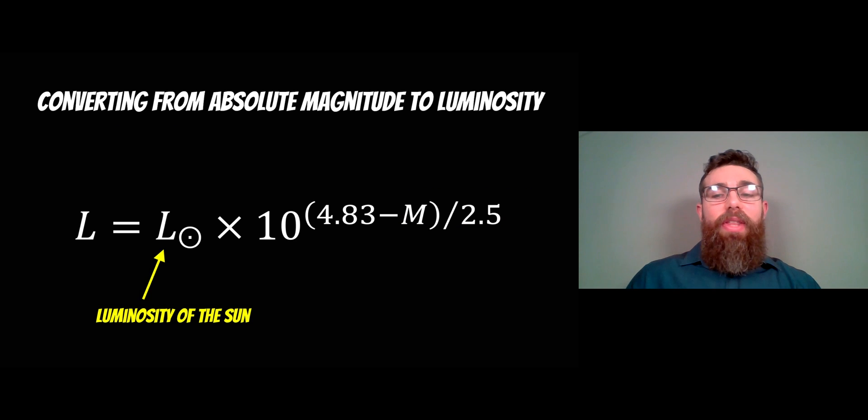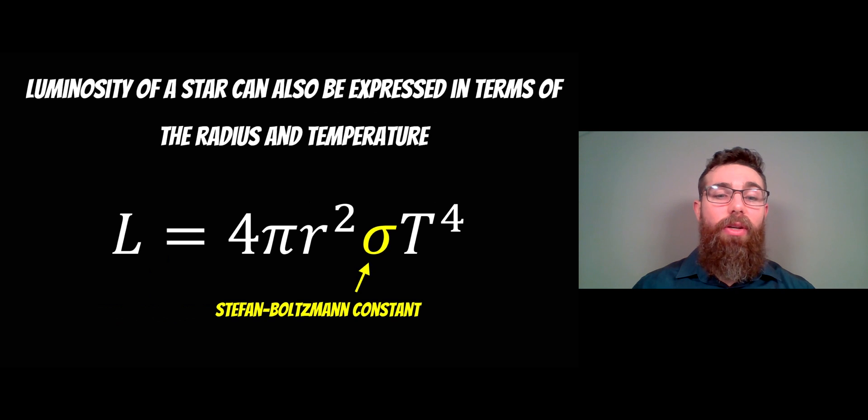So once we then have an absolute magnitude, we've measured the apparent magnitude, we've also measured the distance from the star. We can then convert that absolute magnitude to a luminosity. So here we know the luminosity of the Sun, we've got the absolute magnitude, we can then get that luminosity. We've now got a value for that luminosity and we've got a temperature for the star. So we should be able to go about looking at getting a radius for that particular star.